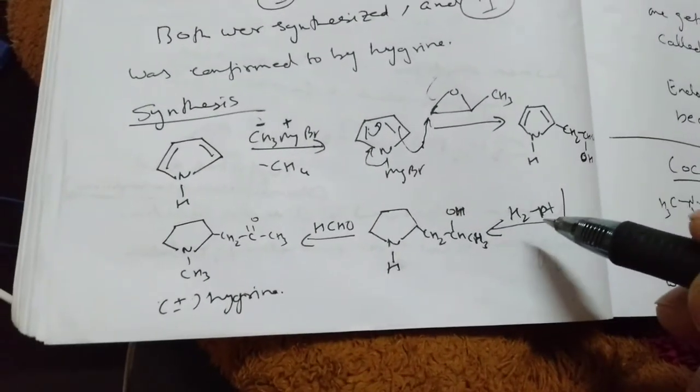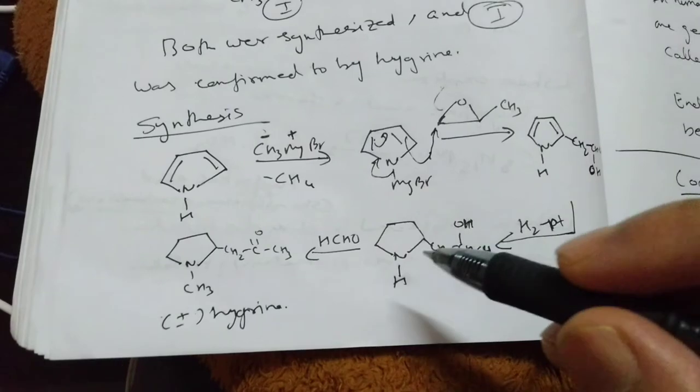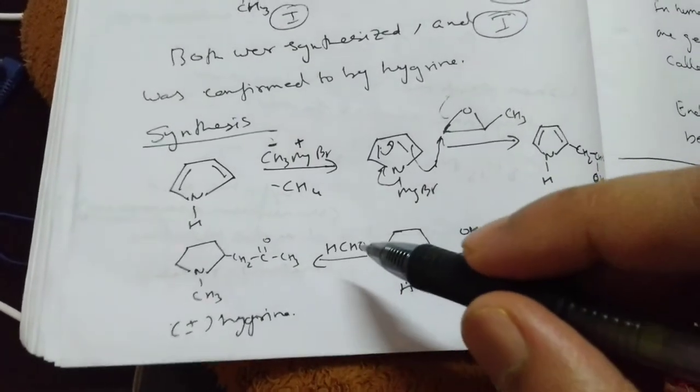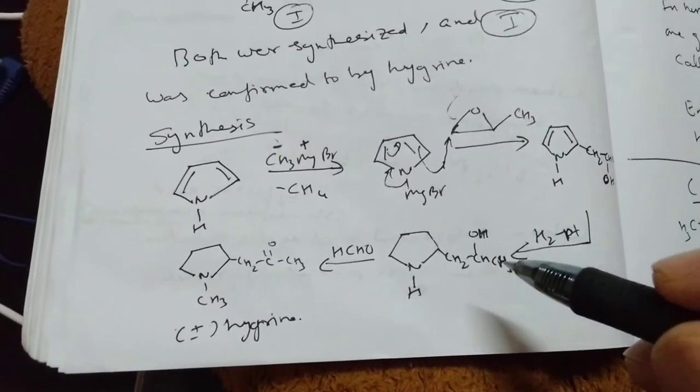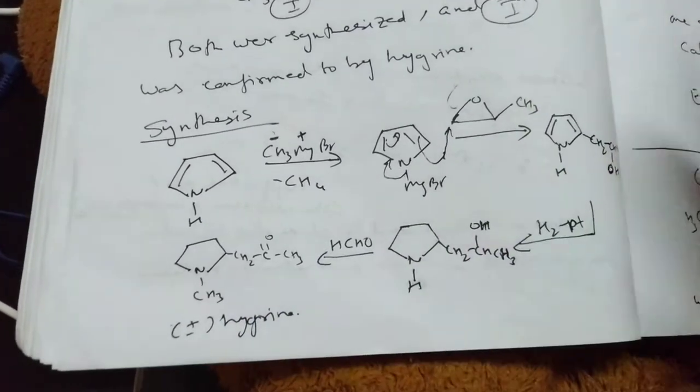This opens up, getting CH2OH. They reduced with H2 and Pt, so this reduces, then they used HCHO. This is a very strange reaction but that's what they used and they got CH3CH2COCH3 plus hygrin mixture.